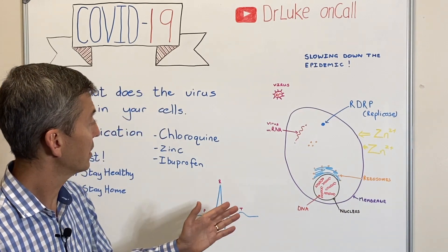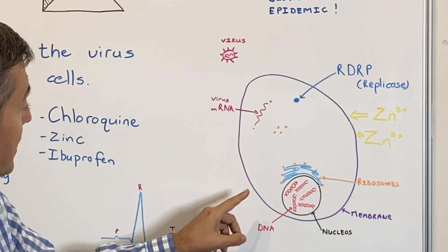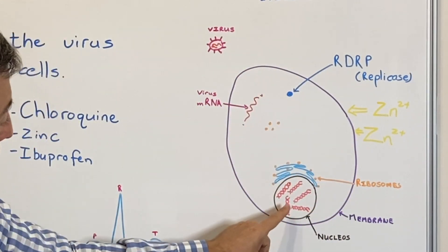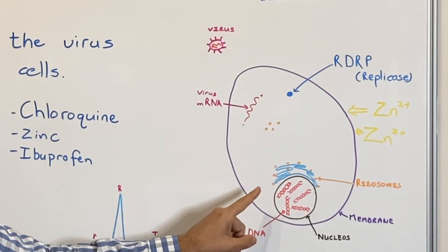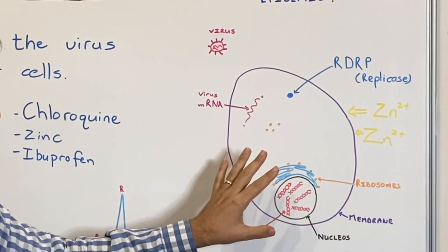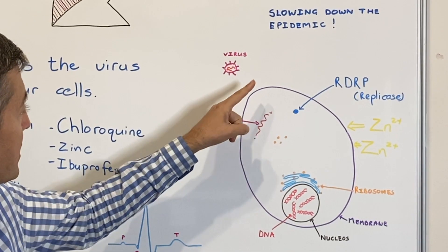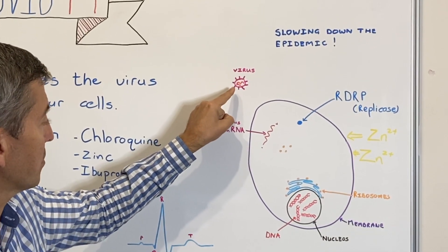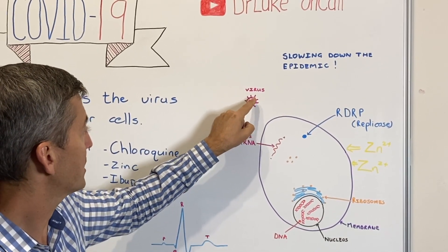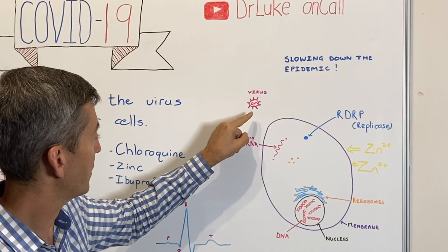We've got to look at the cell to understand how it actually works. The cells in the lungs have a similar appearance — a cell membrane, then a nucleus, and inside the nucleus we've got the DNA. Then there are little round structures called ribosomes. The virus is very tiny; it's got its own genetic code — only RNA, which is not the full DNA — and it's got protein around it to protect it, and these little spike S proteins. The S protein spikes are there to recognize which cell it can enter.